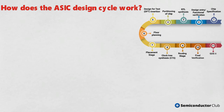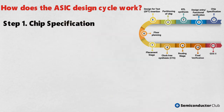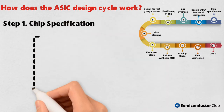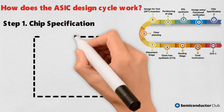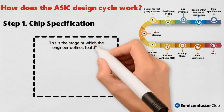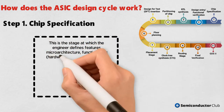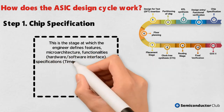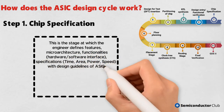Step 1: Chip Specification. This is the stage at which the engineer defines features, micro-architecture, functionalities, hardware, software interface, specifications, time, area, power, and speed, with design guidelines of the ASIC. Two different teams are involved at this juncture.